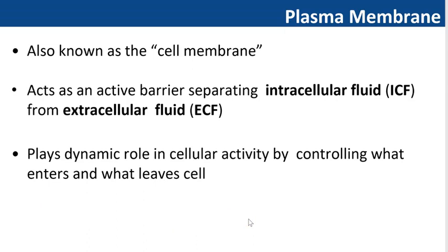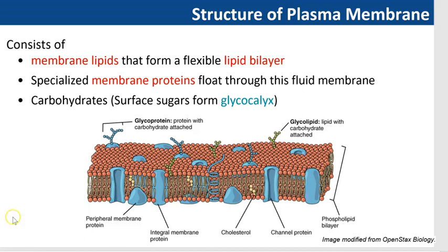Let's look at the plasma membrane or cell membrane. The plasma membrane acts as an active barrier separating the intracellular fluid from the extracellular fluid. It plays a dynamic role in cellular activity by controlling what enters and what leaves the cell. To understand the function of the plasma membrane, let's first look at its structure. The plasma membrane consists of lipids, proteins, and carbohydrates.